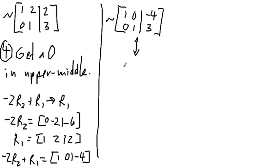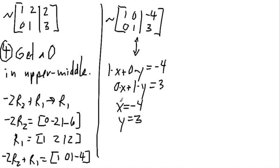And this corresponds to the linear system 1x plus 0y is equal to negative 4, and 0x plus 1y is equal to 3. Or in other words, x is equal to negative 4, y is equal to 3. Fantastic. So that is going to be our solution. And you can go ahead and check that this works out, and I guarantee to you that it does.